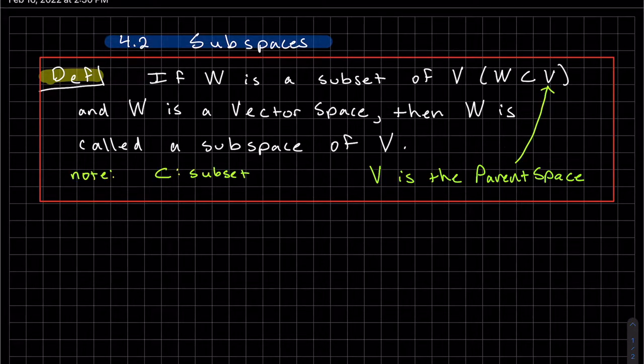If W is a subset of V, and W is a vector space, then W is called a subspace of V. This is the symbol for subset. W is the smaller set inside V. Also, V is called the parent space.